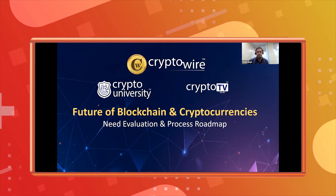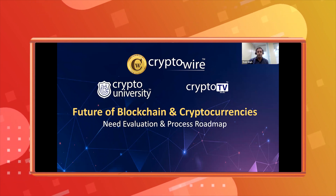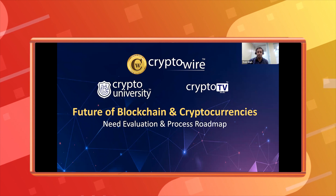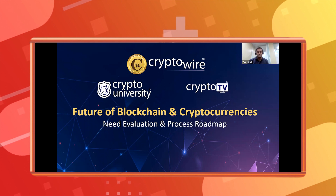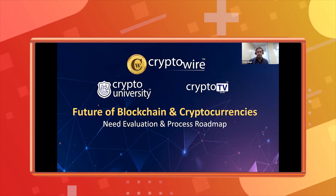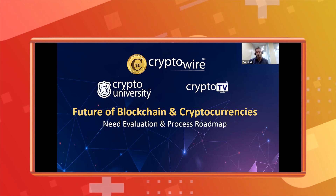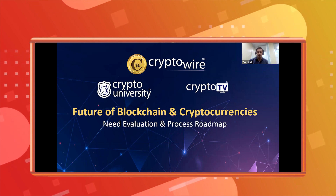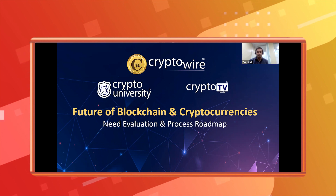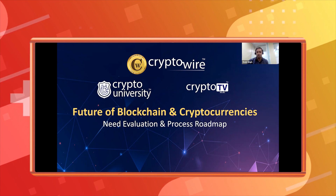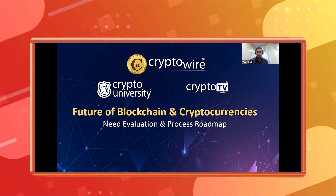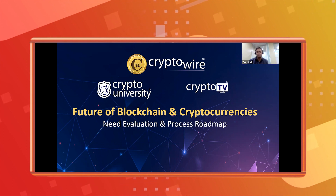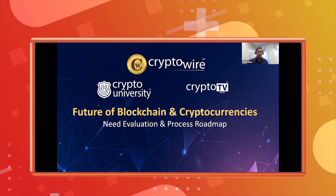The key difference between centralized and decentralized blockchain structures is security. If a hacker wants to attack a single system, it's very easy. But when you talk about attacking hundreds or thousands of systems, it's almost next to impossible. The Bitcoin ecosystem has around one hundred thousand nodes currently, all with high computing power.